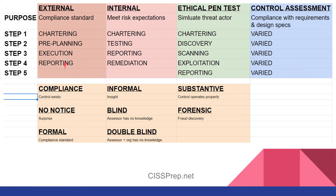Up top we have the four official types of assessments, or the four step-based assessments with their accompanying steps: external, internal, ethical pen test, and control assessments. Down below we have different styles of audit or assessment that can be combined with those four categories. I'll make this sheet available as a study tool with the link in the video description — please feel free to make a copy for yourself and copy it by hand onto your memorization sheet.